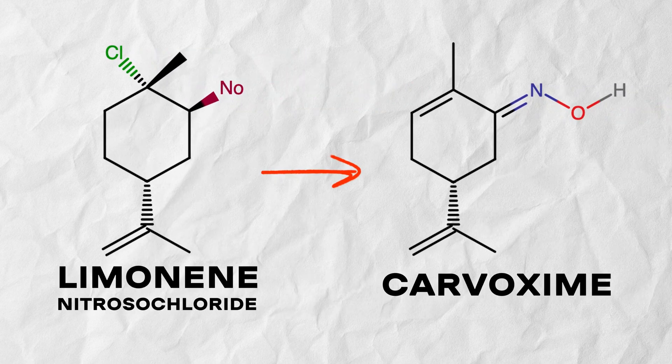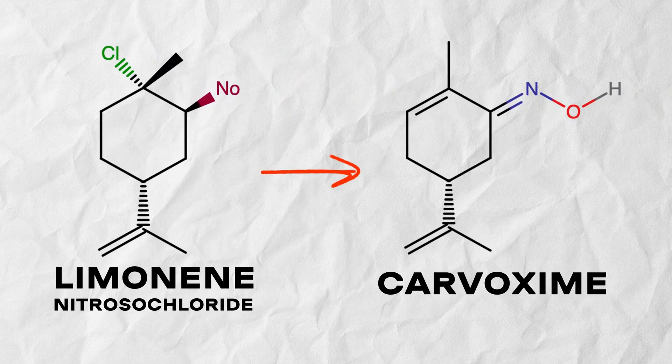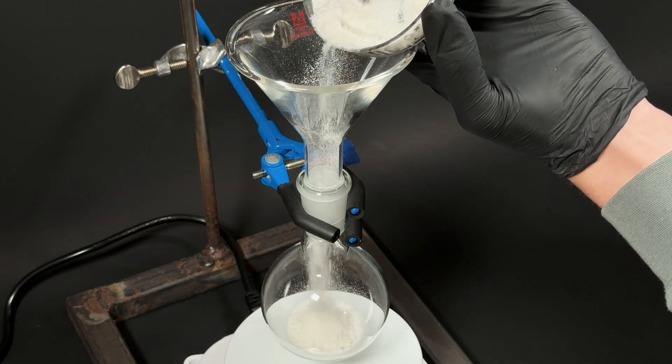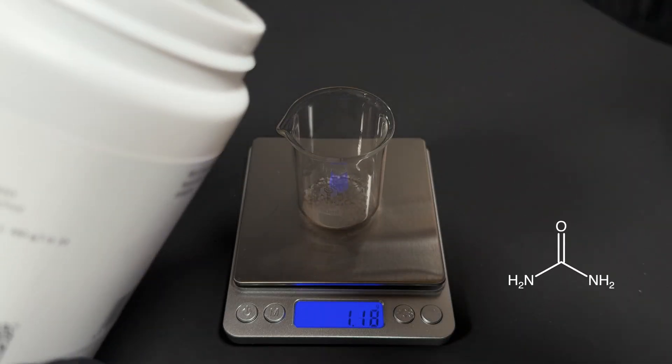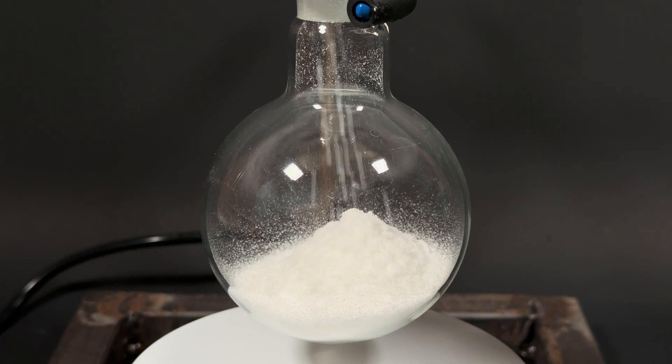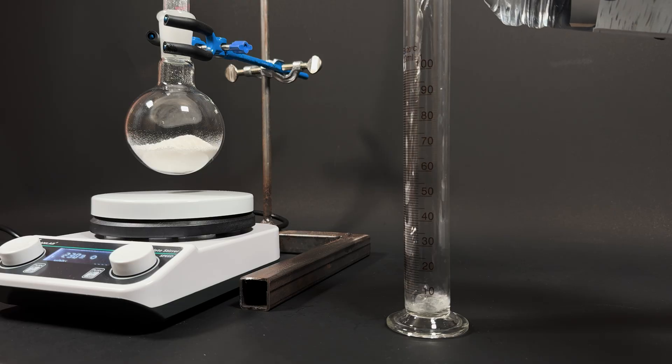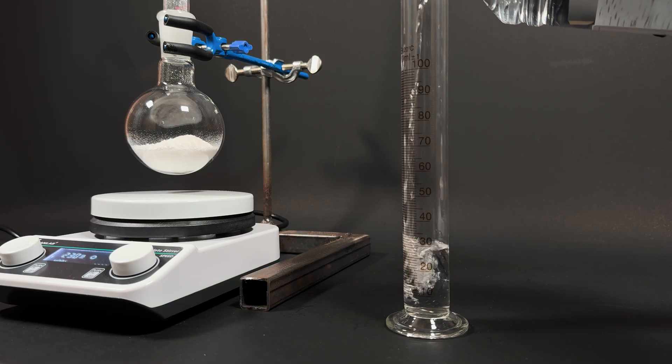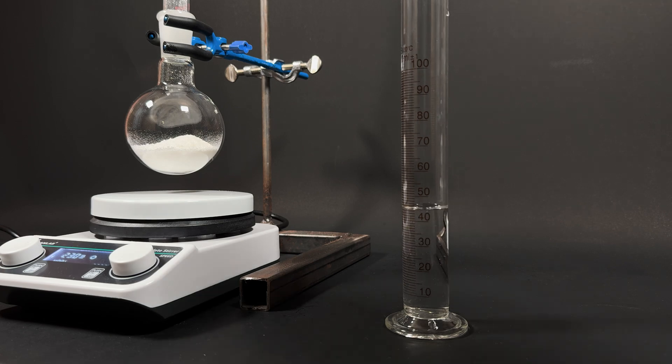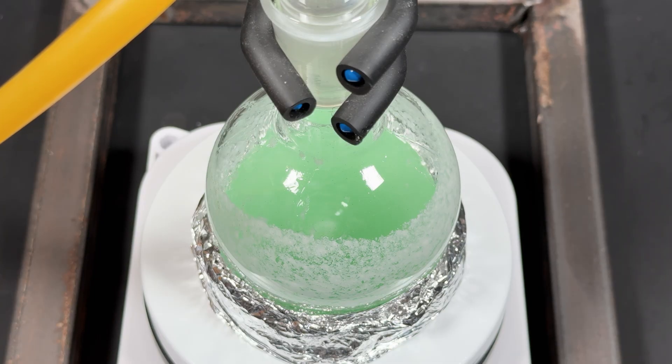Now I've got nitrosyl chloride. My next goal? Turn it into carvoxime. This reaction is much simpler. I pour the synthesized powder into a flask and add urea. This kicks off hydrogen chloride elimination, turning nitrosyl chloride into an oxime. More detailed chemistry is in the file below the video. I pour in absolute ethanol. The solution turns bright green almost instantly.